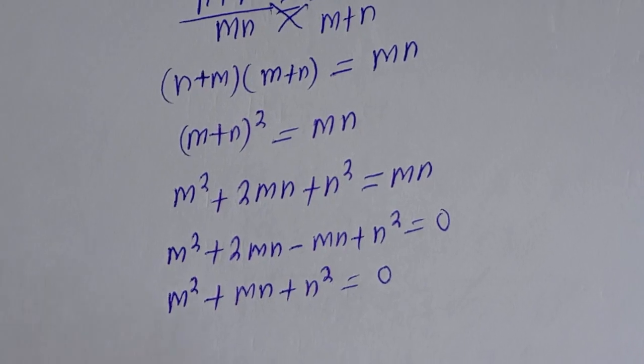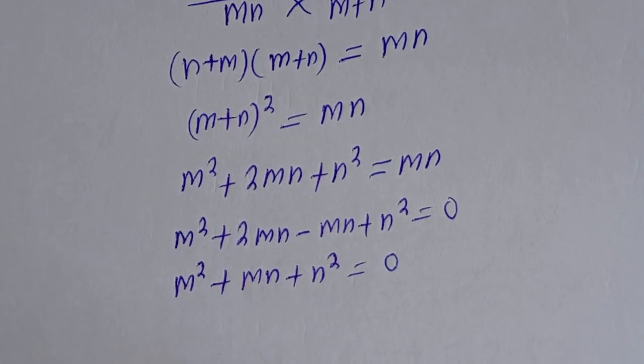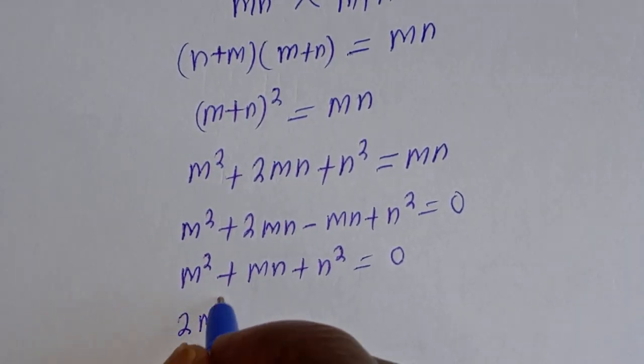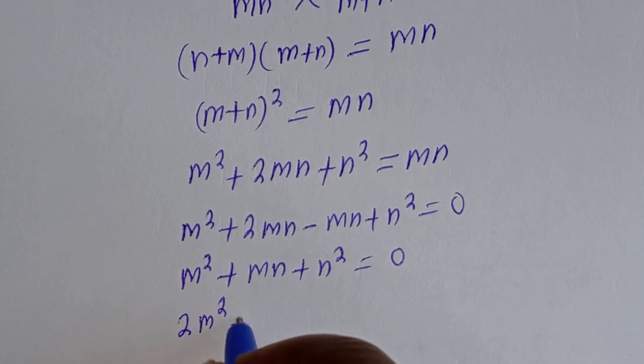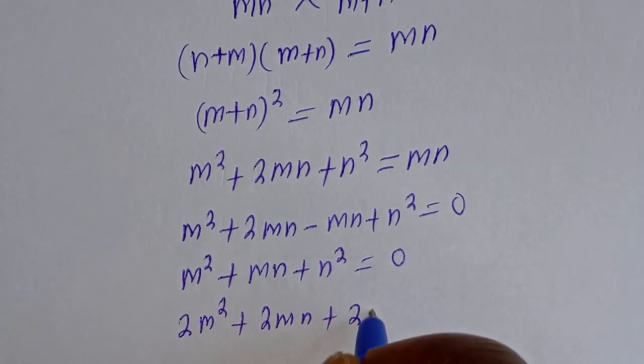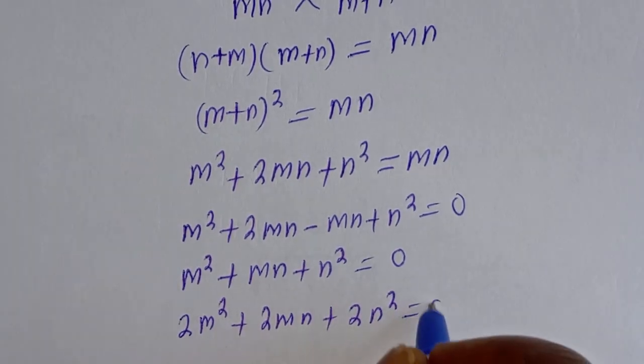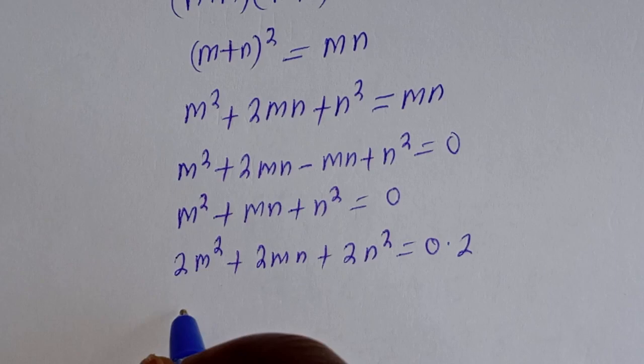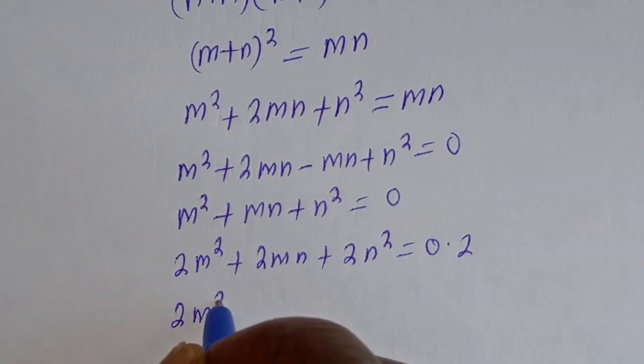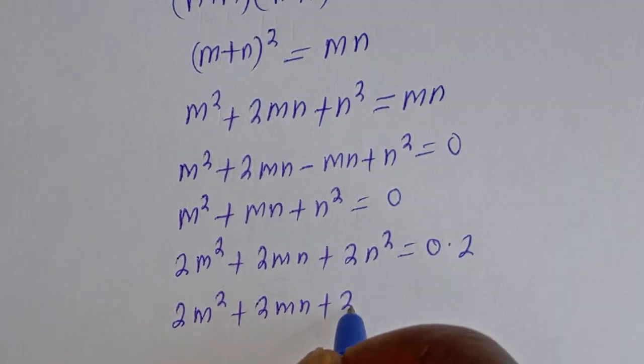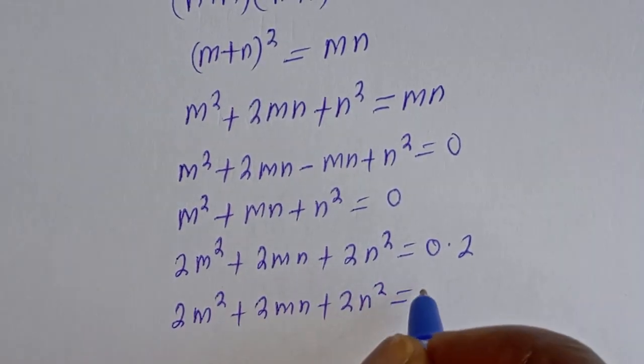But we have a plan. Let's make this 2mn. Then let's multiply all by 2. 2m square plus 4mn plus 2n square is equal to 0.